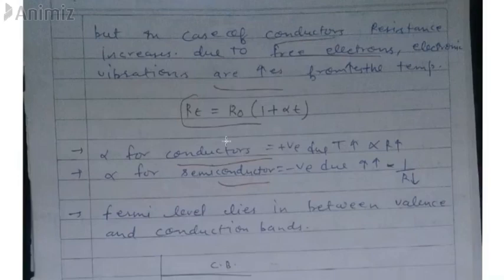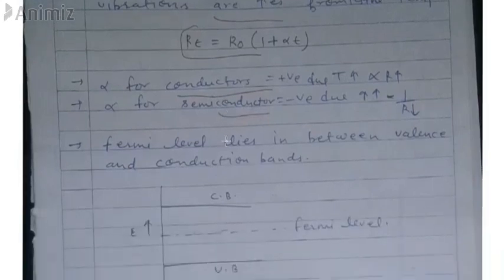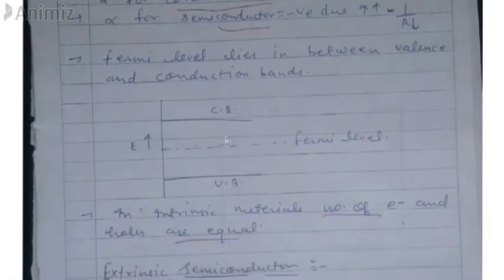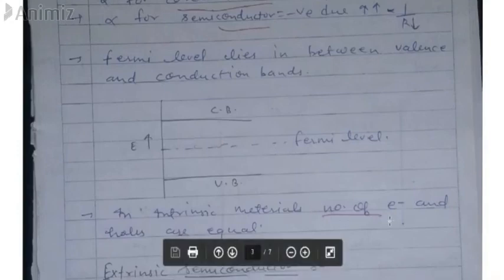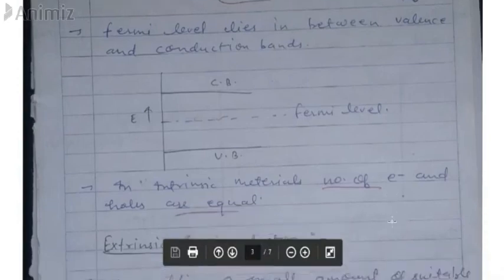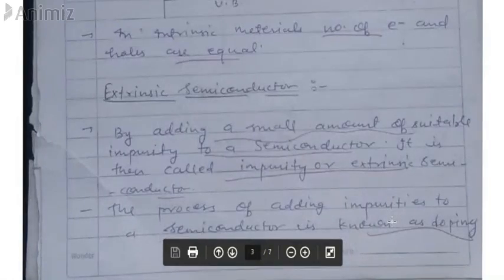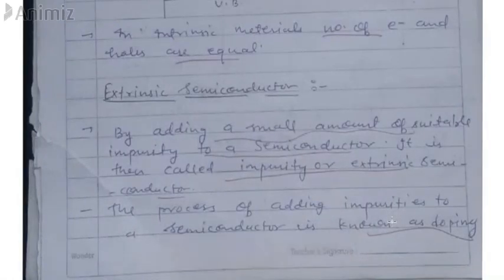If we talk about intrinsic semiconductors, we talk about where the Fermi level is. In the energy band, the Fermi level is at the center between the valence band and the conduction band. In intrinsic material, the number of electrons and holes are equal. The other type is the extrinsic semiconductor, which we will talk about in the next video. Thank you guys.